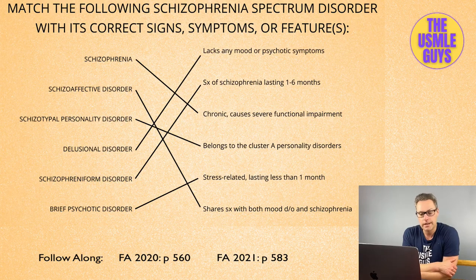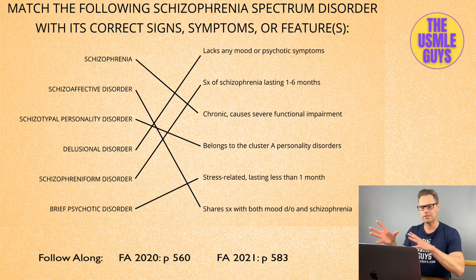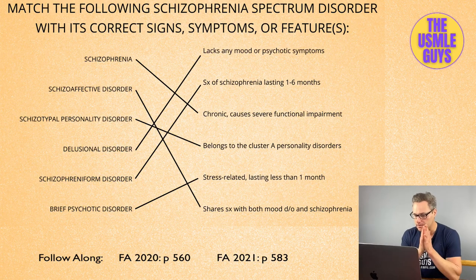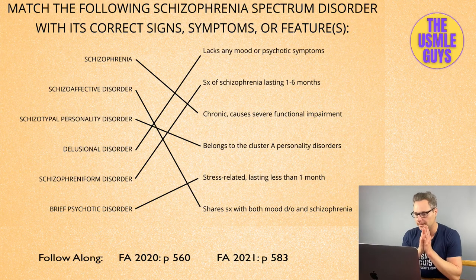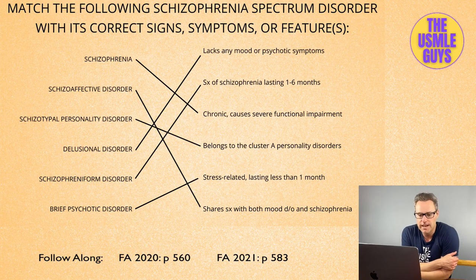Delusional disorder falls under the schizophrenia spectrum disorders and is characterized by one or more delusions lasting more than one month in the absence of a mood or psychotic disorder. Finally, schizotypal disorder is a cluster A personality disorder that may involve brief psychotic episodes that are infrequent and less severe than those seen in schizophrenia. We'll cover it in the personality disorders lectures, but keep in mind it has 'schizo' in the name and can demonstrate those types of signs and symptoms.